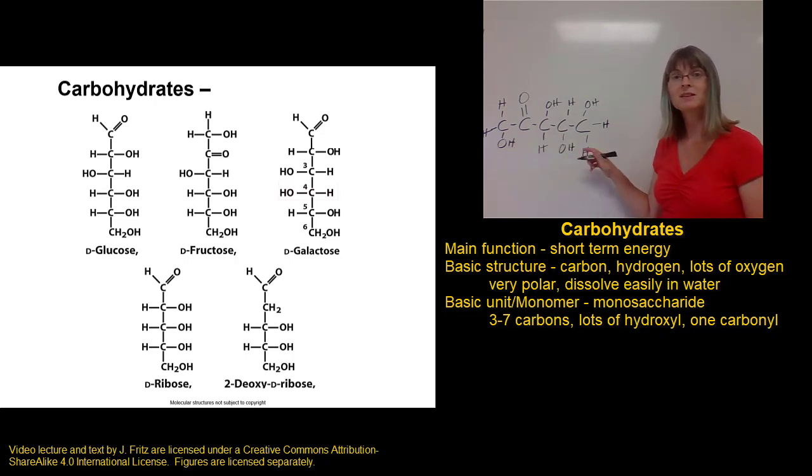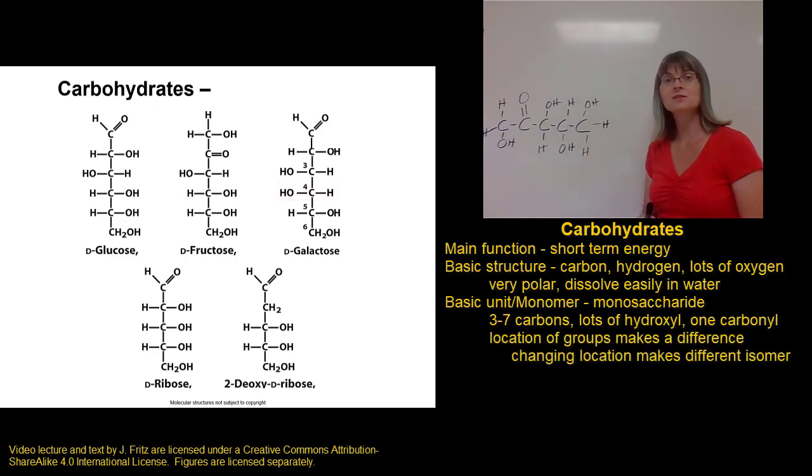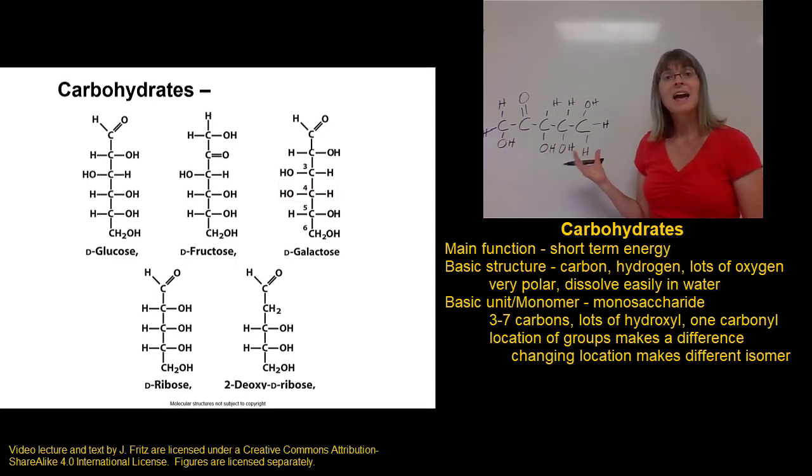A monosaccharide has a chain of carbons, a lot of hydroxyl groups, one carbonyl. One of the things to note about monosaccharide structure is that the location of the hydroxyl groups and the hydrogens does matter. So the way I drew this monosaccharide, I have one particular structure. If I switch the location of one of these hydroxyl groups, I have a molecule that has the same molecular formula, the same number of carbons and hydrogens and oxygens, but now the atoms are in a slightly different arrangement. Do you remember what we call molecules that have the same molecular formula, but a different arrangement of the atoms? They're isomers.